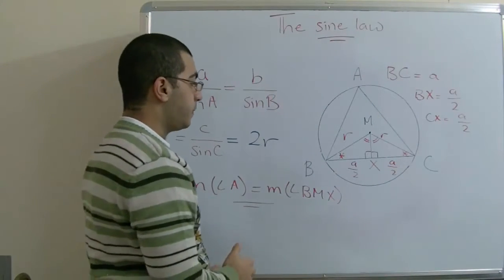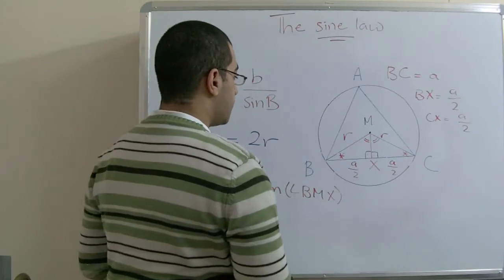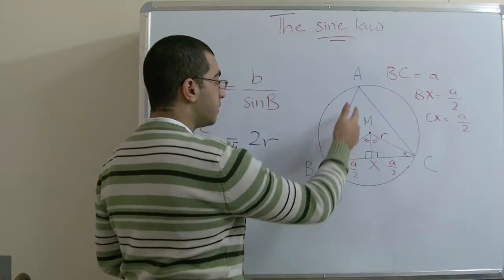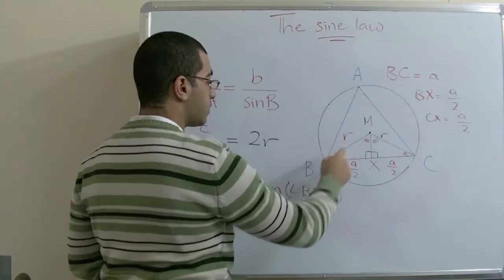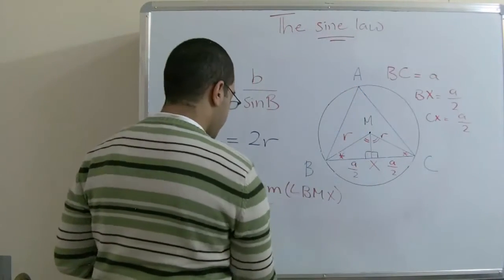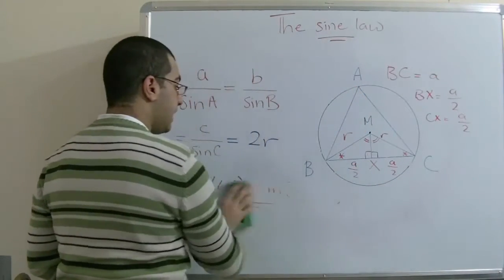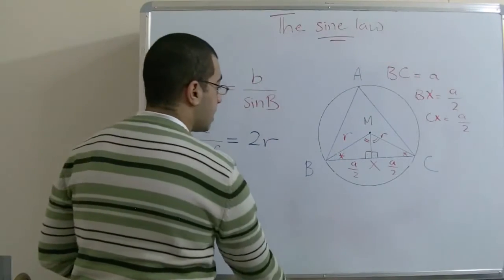To get sine A, and as we have said that measure angle A equals measure angle BMX, instead of writing sine A, we will get sine BMX.